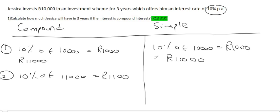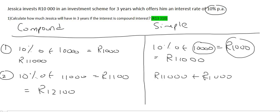And that means that after year two she would now have 12,100 Rand. However with simple interest they don't do that. They keep using the 10,000 Rand and so they keep giving Jessica 1,000 Rand. And so that means she'll have 11,000 plus another 1,000 Rand and so she's only going to have 12,000 Rand.